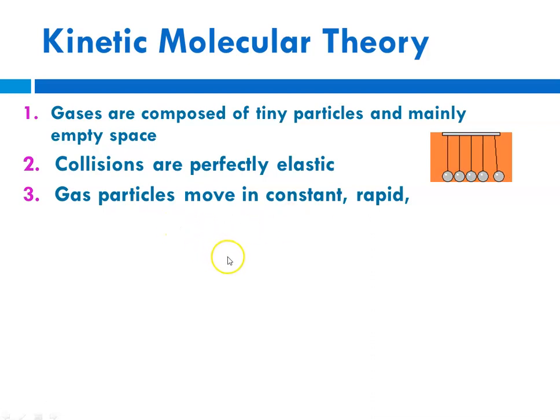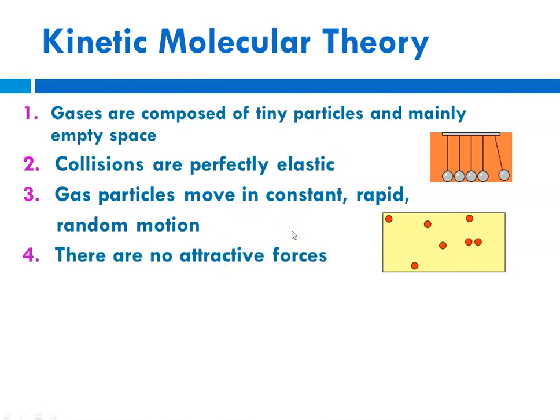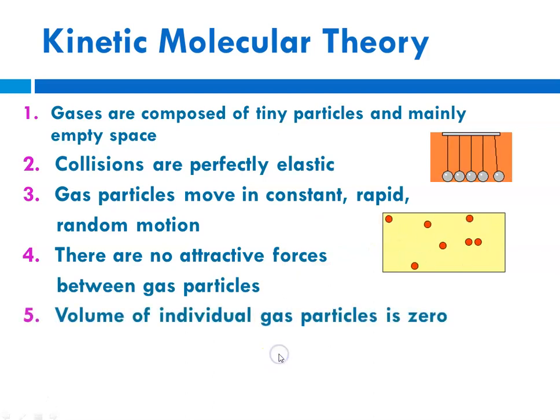The gas particles are moving in constant, rapid, random motion. So that's an applet showing you allegedly random motion. There are no attractive forces or repulsive forces between the particles. So they're not attracted or repulsed by one another. And the volume of the individual gas particles for an ideal gas is set as zero. So again, the reason that they're mostly empty space is the particles have a volume of zero.